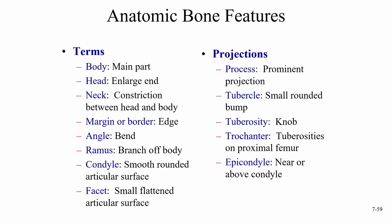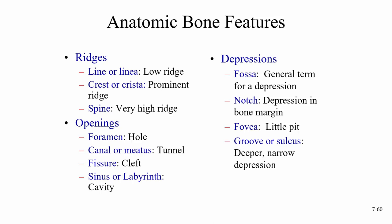For projections, we have a process, which is a prominent projection; a tubercle, which is a small rounded bump; a tuberosity, which is a knob; a trochanter, which is a tuberosity on the proximal femur; and an epicondyle, which is near or above the condyle. For ridges, we have a line or linea, which is a low ridge; a crest or crista, which is a prominent ridge.